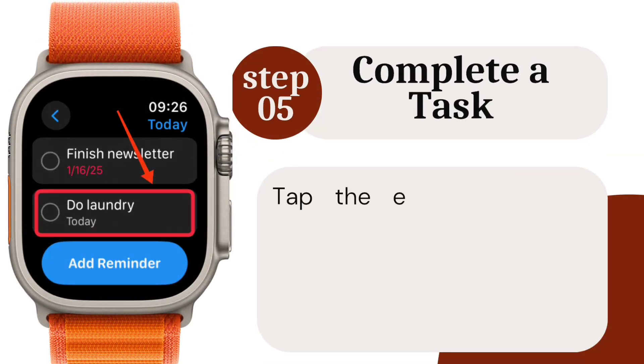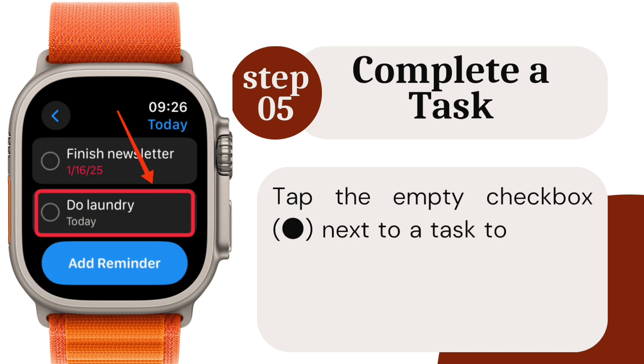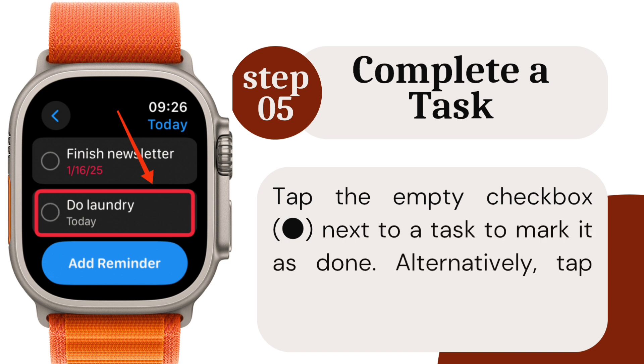Step 5: Complete a task. Tap the empty checkbox next to a task to mark it as done. Alternatively, tap the task itself for more options.